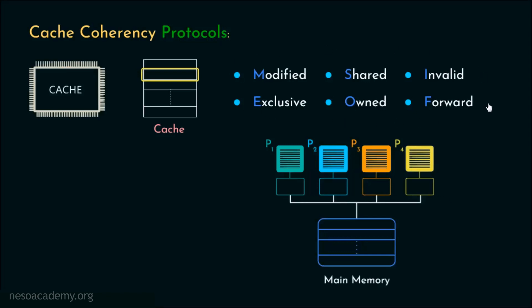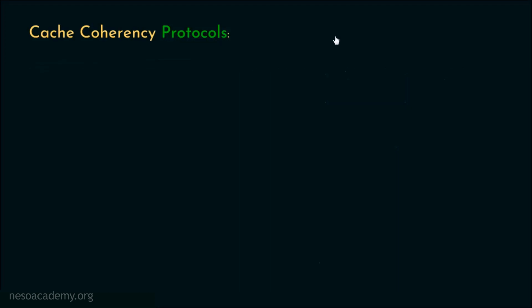These are the states that can be specified for a cache line depending on the protocol being followed. As a solution to the cache coherence problem there exist software-based cache coherence schemes which rely solely on the compiler and the operating system. Compiler-based mechanisms analyze code to determine which data items may become unsafe for caching, and the OS then prevents those items from being cached at runtime. However, these are called cache coherence schemes, not protocols. Hardware-based solutions are generally referred to as cache coherency protocols, and since we are in the COA course we will mainly focus on those, as they also demonstrate improved performance over software-based schemes.